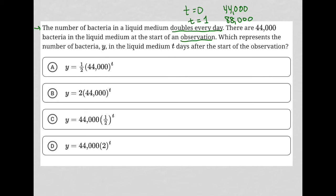So for instance, for choice A, if T were zero, that would make this whole thing equal to one. One half times one is not 44,000. So that's gone. If T were equal to zero here, this whole thing would be one. Two times one is two, so that's gone. We want 44,000 to be the answer when T equals zero.